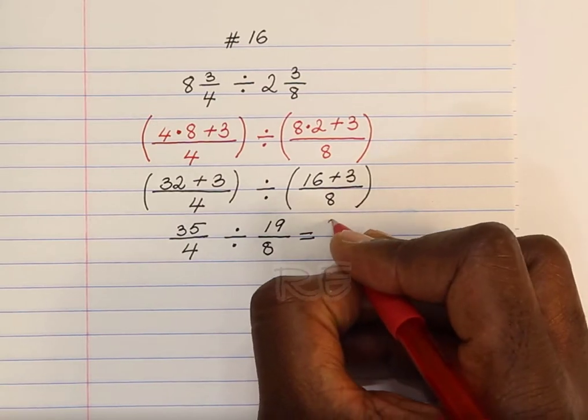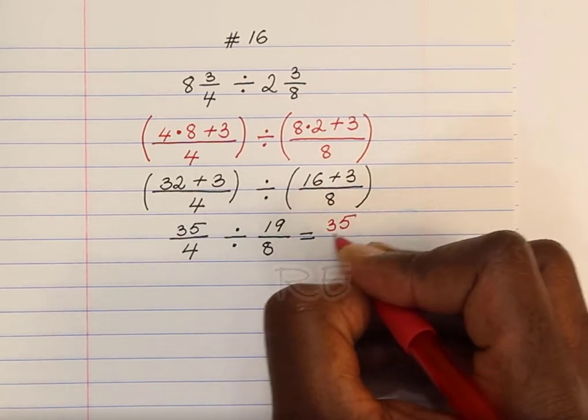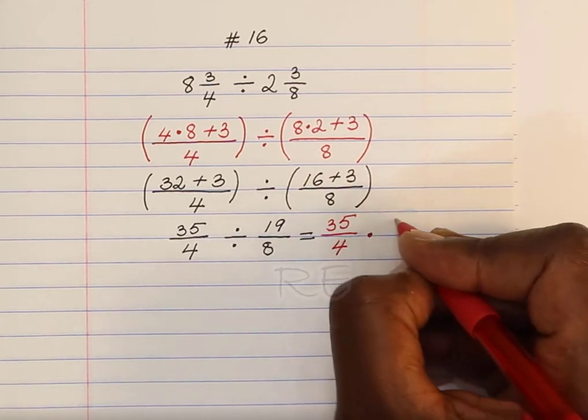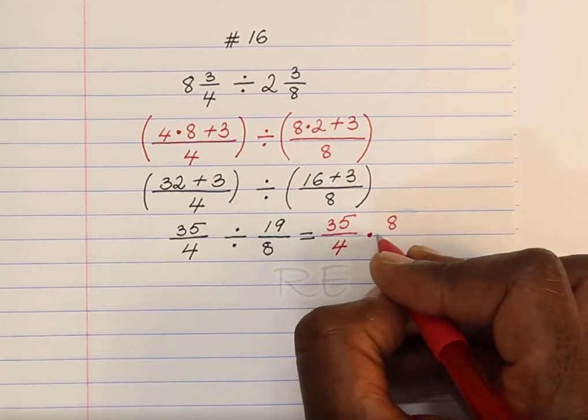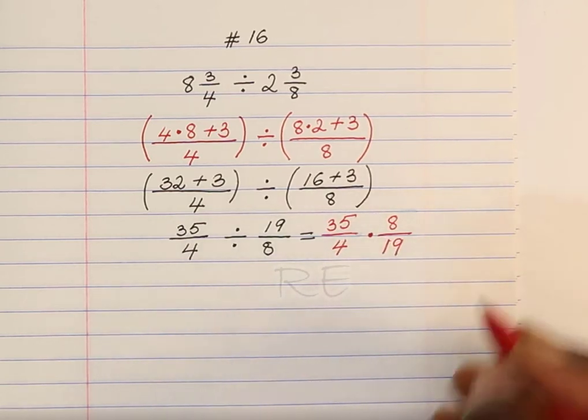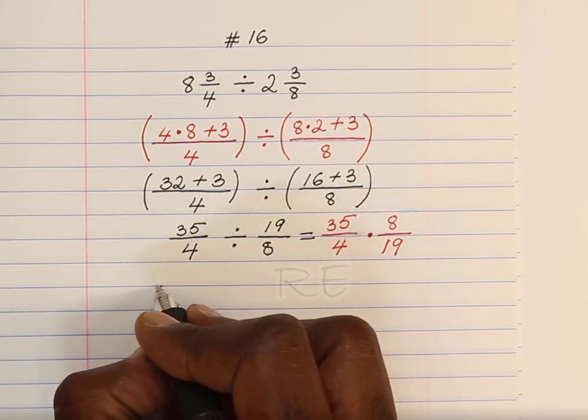Keep the first fraction, 35 over 4. The division becomes a multiplication by the reciprocal. So we flip 19 over 8 and we have 8 over 19.